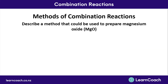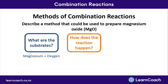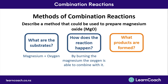Here's an example for us to work through. We're going to describe a method for how to prepare magnesium oxide. The substrates are magnesium and oxygen. The reaction requires heat energy, so we burn a magnesium ribbon under a Bunsen burner so it can combine with the oxygen in the air. The product formed is magnesium oxide.